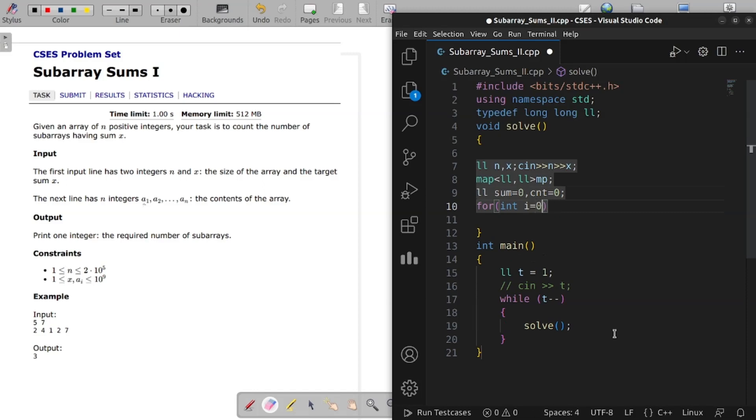We run for loop from 0 to n for every element. We will take an element. Check if map, sorry, firstly we will update our sum. Now check if sum minus x is present, then we will increase our count. Otherwise, we will update the sum in the map.